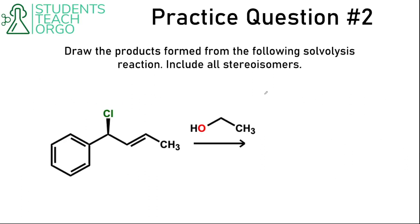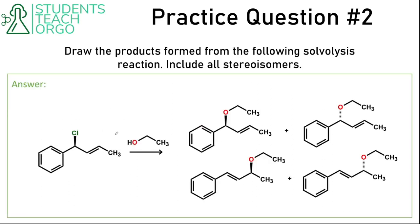Here's the next question: draw the products formed from the following solvolysis reaction, including all stereoisomers. The chlorine would leave, giving a plus charge. We could have the solvent ethanol attack from the front or the back to give us the wedge or the dash. Or we could draw the resonance structure where we move that double bond over, giving the plus charge on this carbon, which would give us this product and this product. These two are just enantiomers. There is no stereochemistry retention in these reactions.